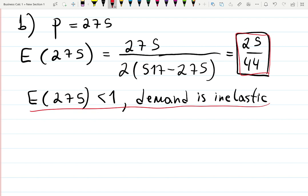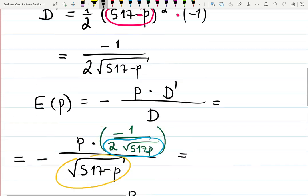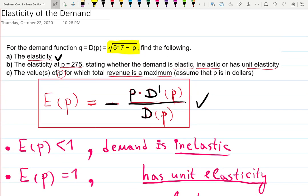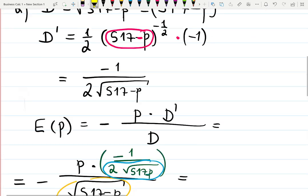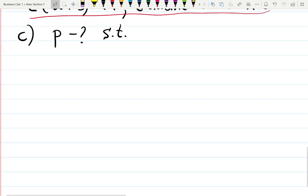Now part c asks—that's the last question—find p such that the total revenue is maximum. So we're maximizing revenue. We want the revenue function to be maximized or to reach the maximum value.